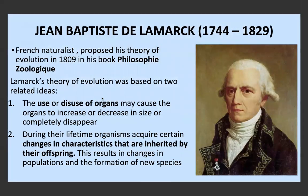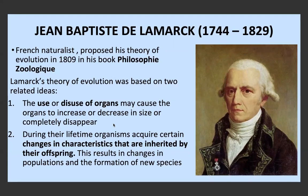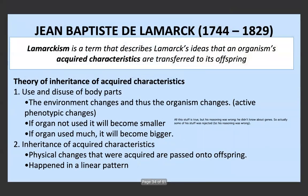Jean-Baptiste de Lamarck was a French naturalist who proposed his theory of evolution in 1809. His theory was based on two important ideas. The first was the use or disuse of organs — he said that organs can increase or decrease in size, or even completely disappear, depending on how much they were used. The more they were used, they may increase in size; the less they were used, they may decrease and possibly disappear. His second idea was that during their lifetime organisms acquire certain changes in characteristics that are then inherited by their offspring, resulting in changes in populations and the formation of new species.